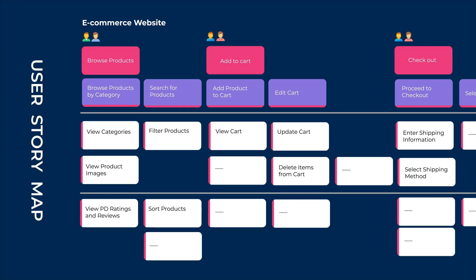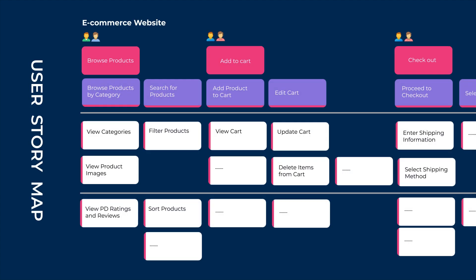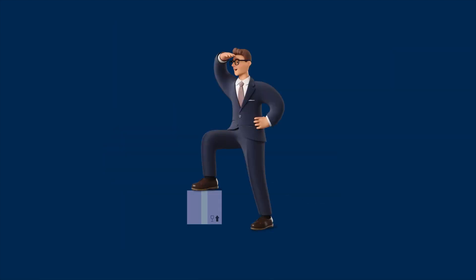User story map was created by Jeff Patton. He first introduced the idea in the early 2000s as a way to help teams understand the customer's perspective and prioritize their work. Over time, the concept of the user story map has evolved and become widely adopted in actual software development as a tool to organize and manage the product backlog. The user story map has proven to be an effective tool for ensuring that the team remains focused on delivering value to the end user and for communicating the overall product vision and goals to stakeholders.